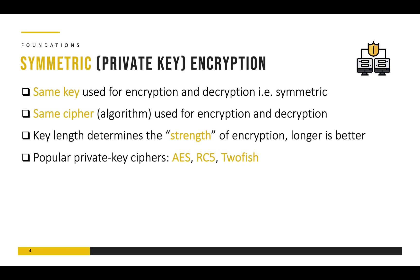The same algorithm is used at the source for encrypting data and the same algorithm is used at the destination for decrypting the data. Key lengths determine the strength of encryption and usually the longer the better. Some popular private key ciphers include AES, RC5, and Twofish.